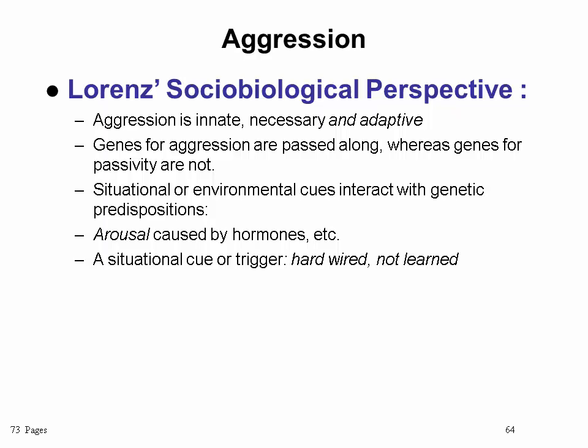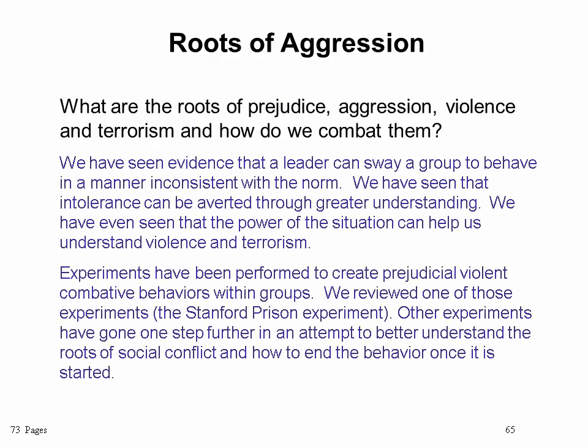Lorenz is a little different but very similar. As a sociobiologist, his perspective is that aggression is innate — just like Freud said, it's built into us and it's necessary. But he also added the word 'adaptive,' meaning that in the past this aggressive tendency must have been useful for our ancestors, and therefore we have it today because our ancestors survived and passed it down to us. Genes for aggression are passed along, whereas genes for passivity are not, because a passive person in the past died and didn't get to have children.